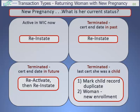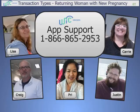So to summarize, when you have a returning WIC client who needs to be enrolled for a new pregnancy, you'll need to look at her enrollment screen to determine her current status and then decide the correct transaction type to use. To help you remember, you can print the job aid about choosing the correct transaction types from the Oregon WIC website — it's in the TWIST Training section. Or, if you still have questions about which transaction type to use, you can call App Support for help at 1-866-865-2953.